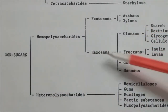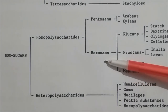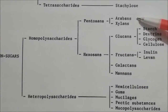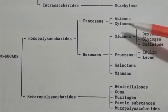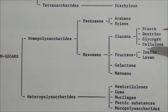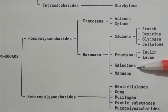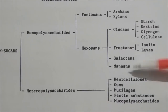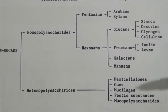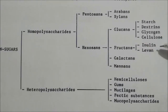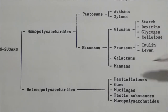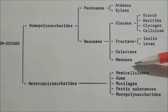In homopolysaccharides, we have pentosans and hexosans. Pentosans include arabans and xylans. Hexosans include glucans, fructans, galactans, and mannans. In glucans, we have starch, dextrins, glycogen, and cellulose. In fructans we have inulin and levan. Galactans and mannans are also present.